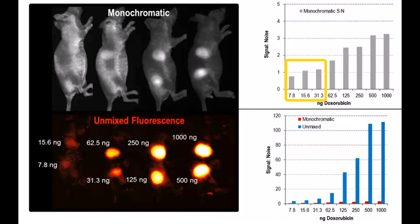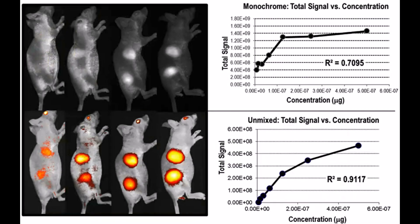In this case, three concentrations of subcutaneous doxorubicin, a fluorescent molecule, were not visible when monochromatic or single filter pair imaging was performed. The signal to noise ratio was at or below one. Spectral unmixing removed background, increased signal to noise, and allowed visualization and detection of the probe.